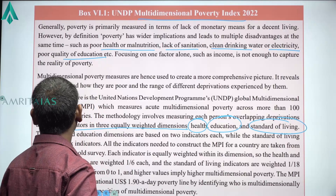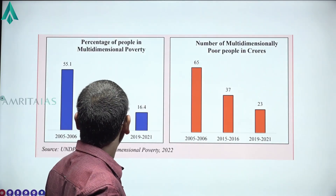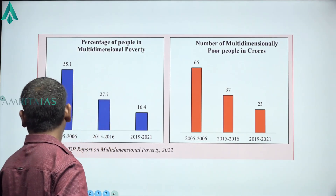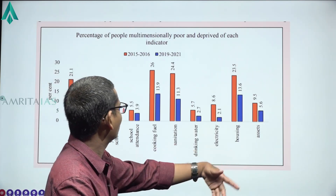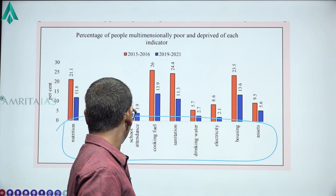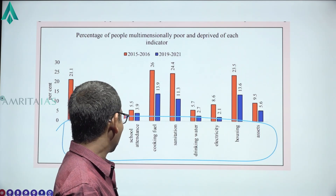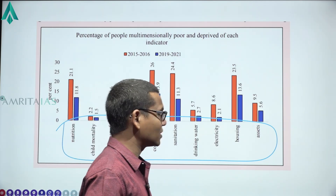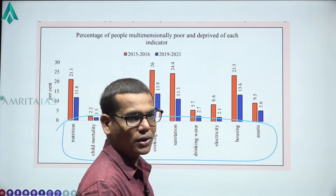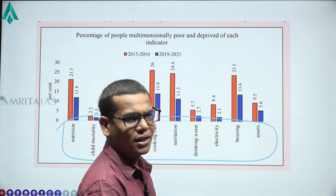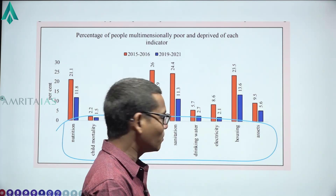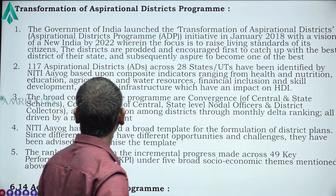The percentage of people in multi-dimensional poverty is given both as a percentage and in absolute numbers, categorized by indicators: nutrition, child mortality, years of schooling, years of attendance, cooking fuel, sanitation, drinking water, electricity, and housing assets. When writing about multi-dimensional poverty, include these aspects. If you get a question on poverty in the exam, it will likely be on multi-dimensional poverty because the definition of poverty is getting widened.